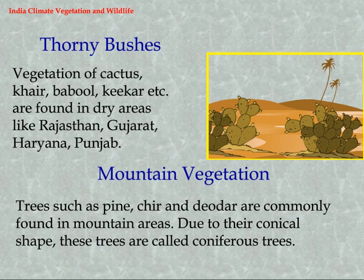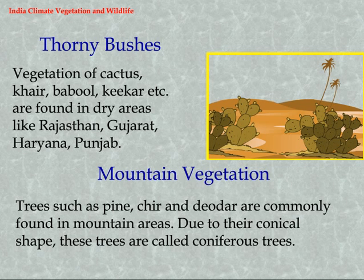Thorny Bushes: Vegetation of cactus, Khejri, Babool, Kikar, etc. are found in dry areas like Rajasthan, Gujarat, Haryana, and Punjab. Mountain Vegetation: Trees such as pine, Chir, and Deodar are commonly found in mountain areas.